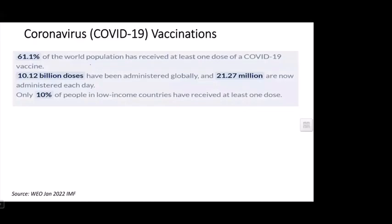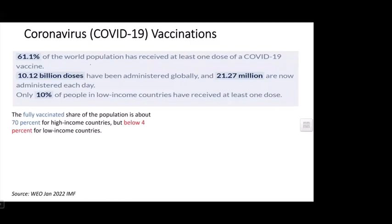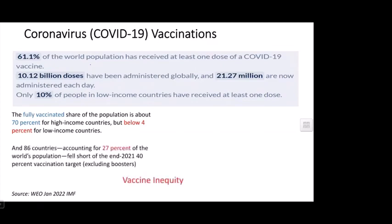Globally, almost 61% of the world's population has received at least one dose of the COVID-19 vaccine, with 10.12 billion doses administered at a rate of 21.27 million per day. However, only 10% of people from low-income countries have received at least one dose. Fully vaccinated rates are almost 70% in high-income countries, versus below 4% in low-income countries, showing significant vaccine inequality globally.